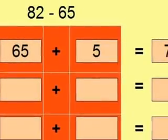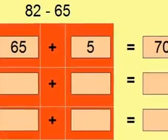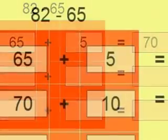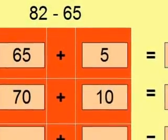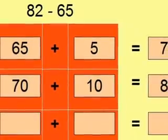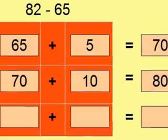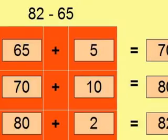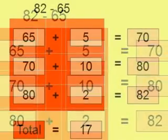So here we have 65. We're going to add 5, which will bring us to the next 10, which is 70. Then we have 70, we add 10, bringing us to 80. And we're now at 80, and of course, we now only have to add 2 to give ourselves 82.